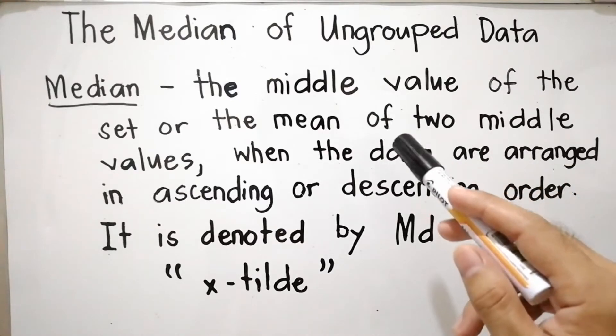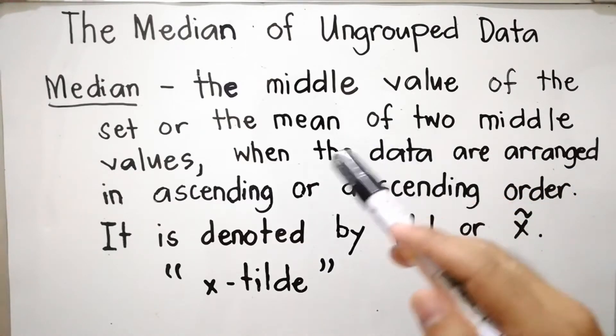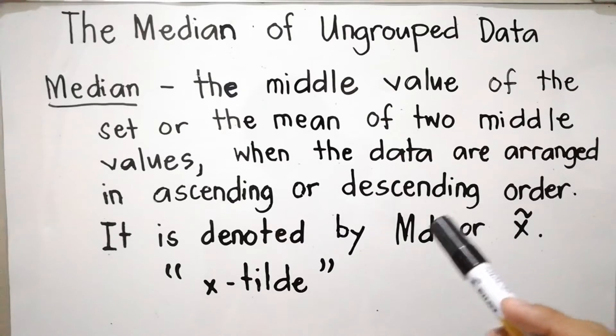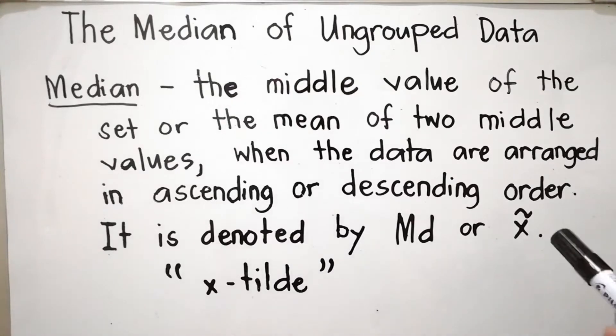When we say median, that is the middle value of the set or the mean of two middle values when the data are arranged in ascending or descending order. It is denoted by MD or this symbol, which is read as x-tilde.